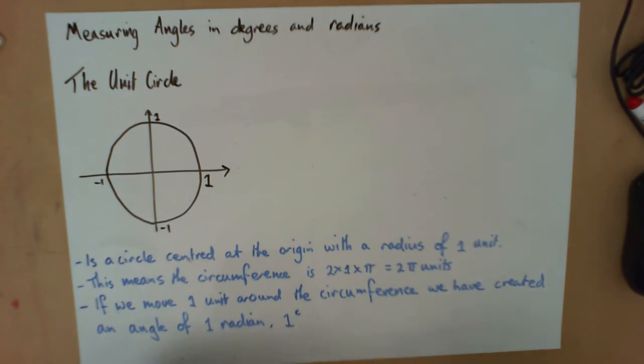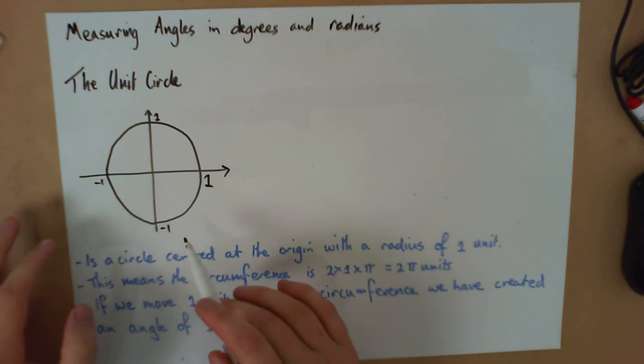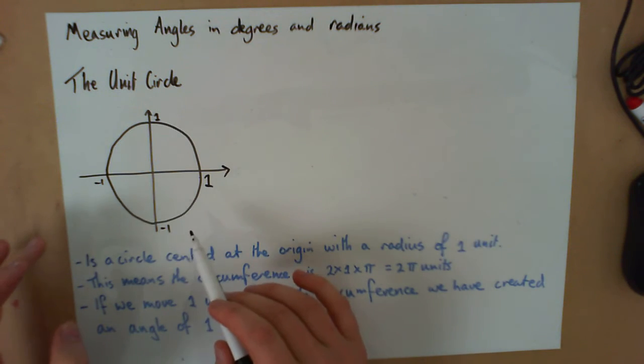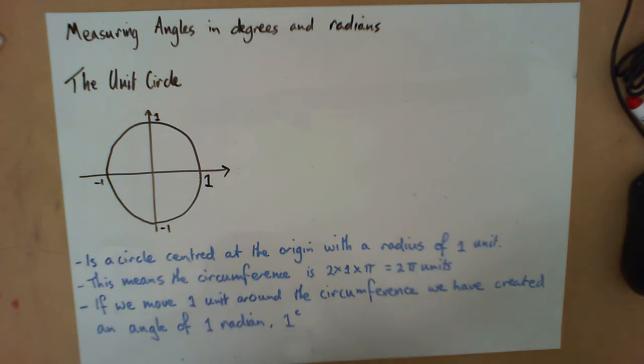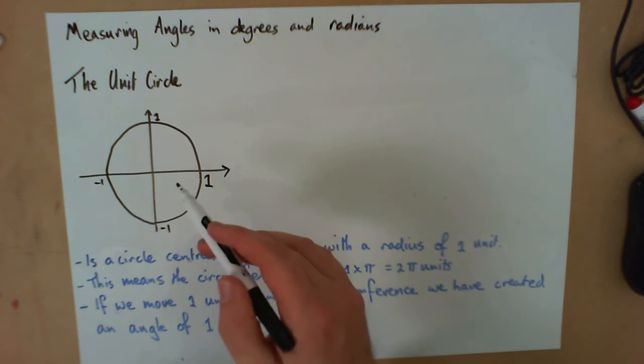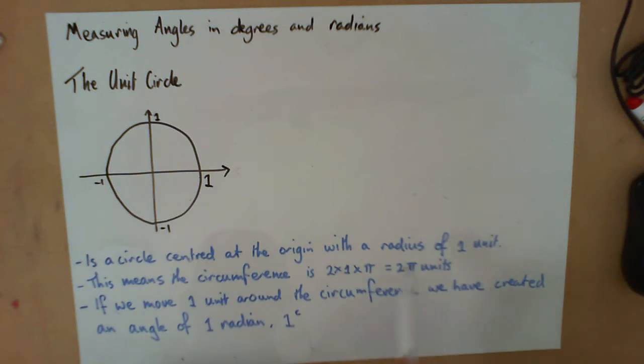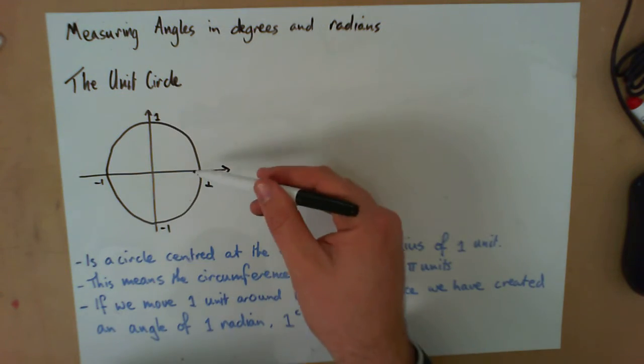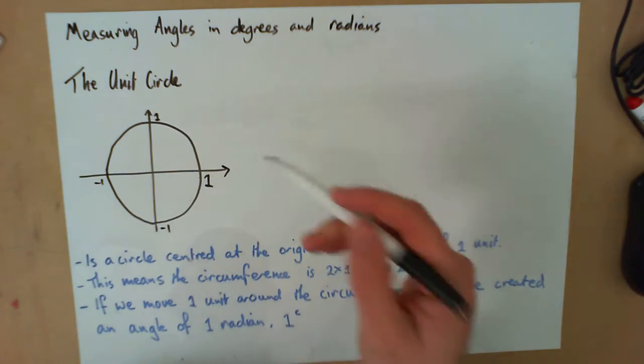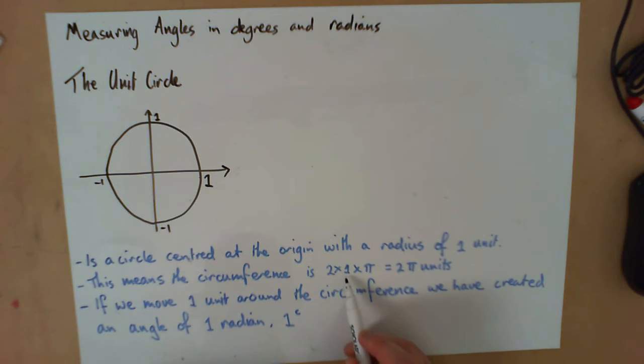The first thing we need to talk about is the unit circle which I've drawn here. This is an incredibly useful diagram for all of our work on trigonometry and it's going to build as we go through the unit. The idea of the unit circle is it's centered at the origin with a radius of 1 unit. This means our circumference is 2 times our radius which is 1 times π, or just 2π units.